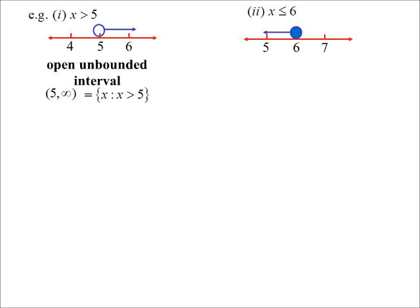Okay, X is less than or equal to 6. So this time I colour in the circle to indicate, yes, the endpoint is included. So this one is closed, because the endpoint is included. It's still unbounded, because in the other direction, it's going to negative infinity in this case.